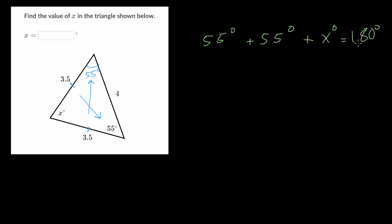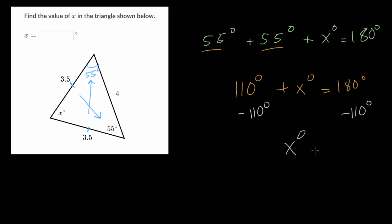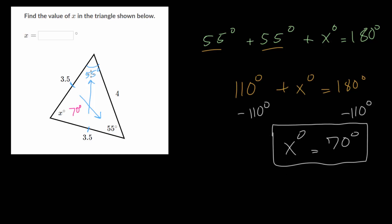From here we combine like terms: 55 and 55 is 110 degrees. Solving for x, we subtract 110 from each side, and 180 minus 110 gives us 70 degrees. So that's our final answer. To check, just plug in what you think is the answer and make sure the angles add up to 180 degrees. 55 and 55 makes 110, and 110 plus 70 is 180. So our missing angle is 70 degrees.